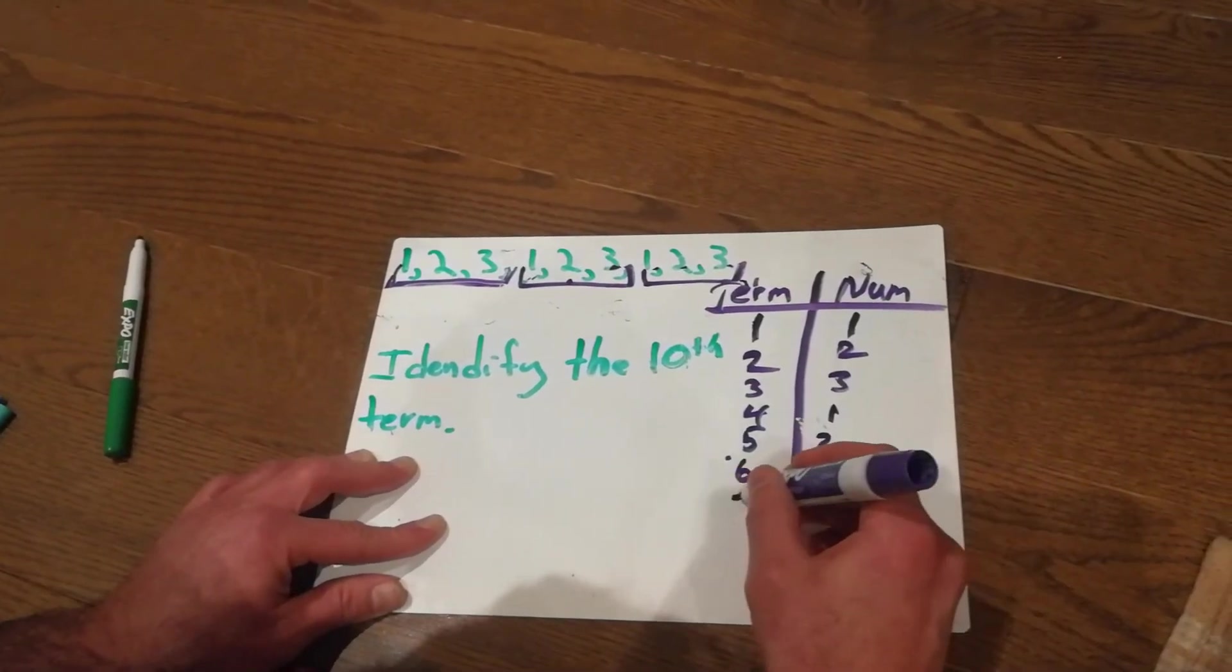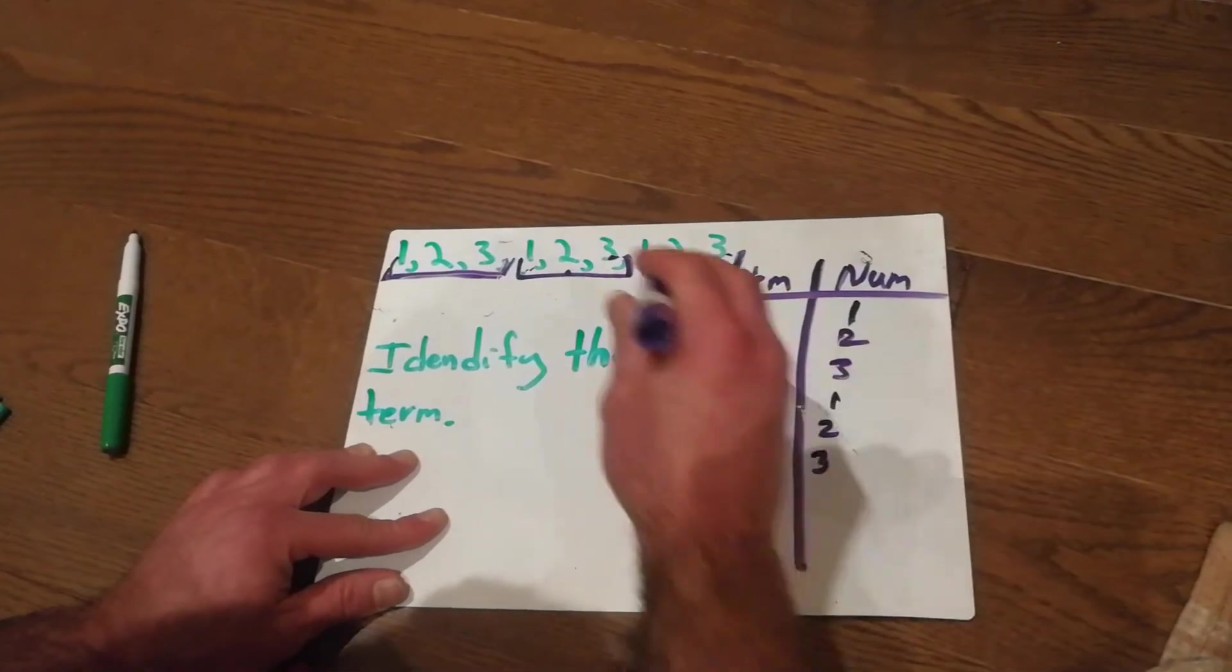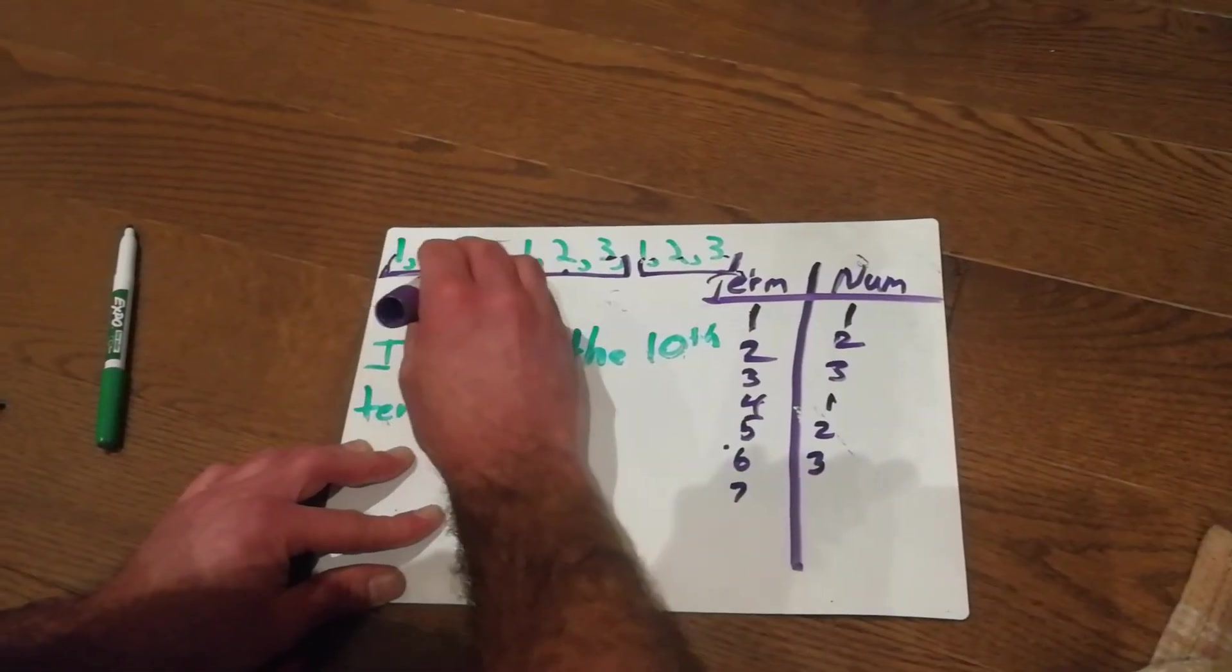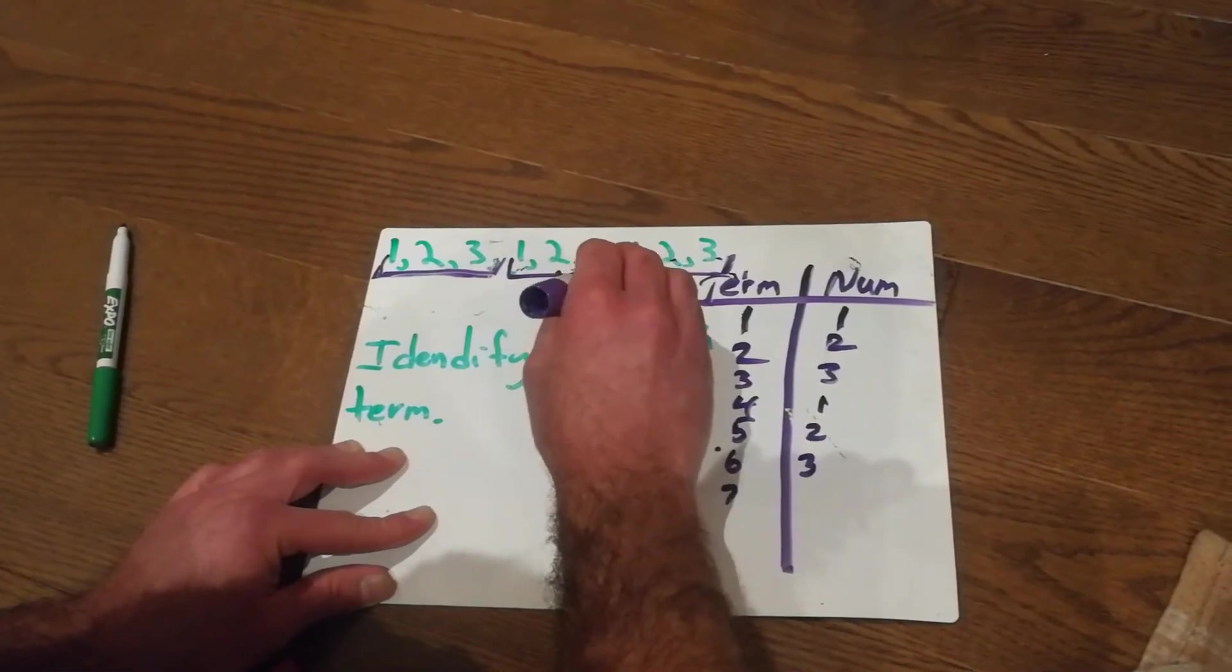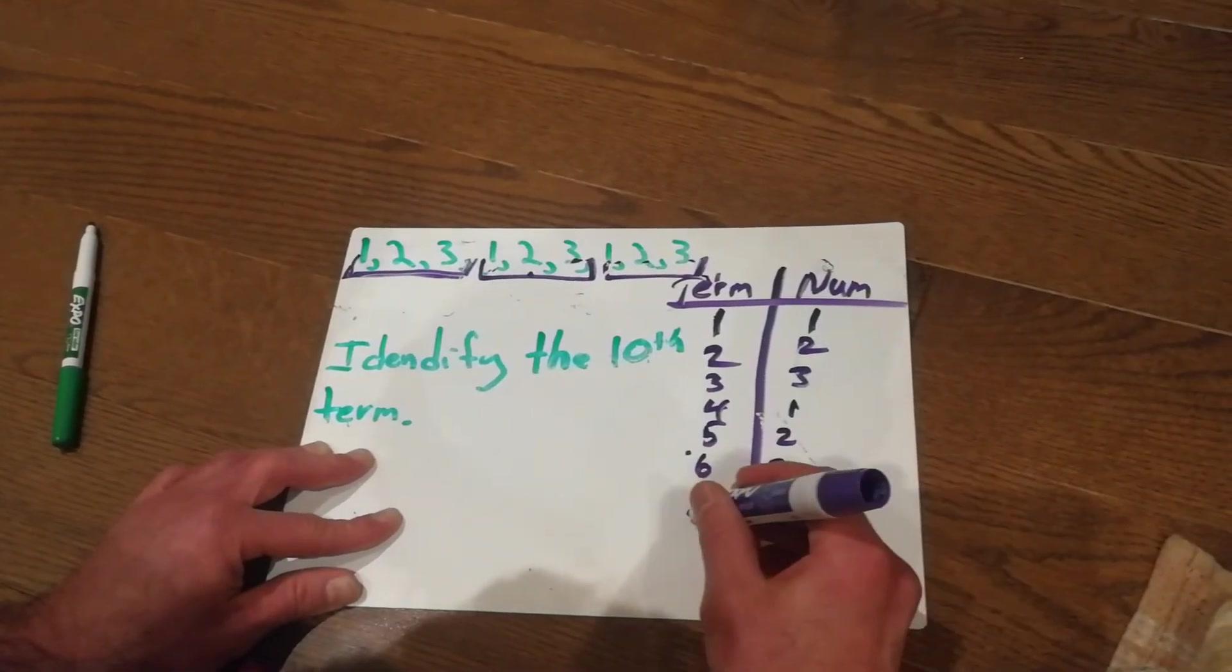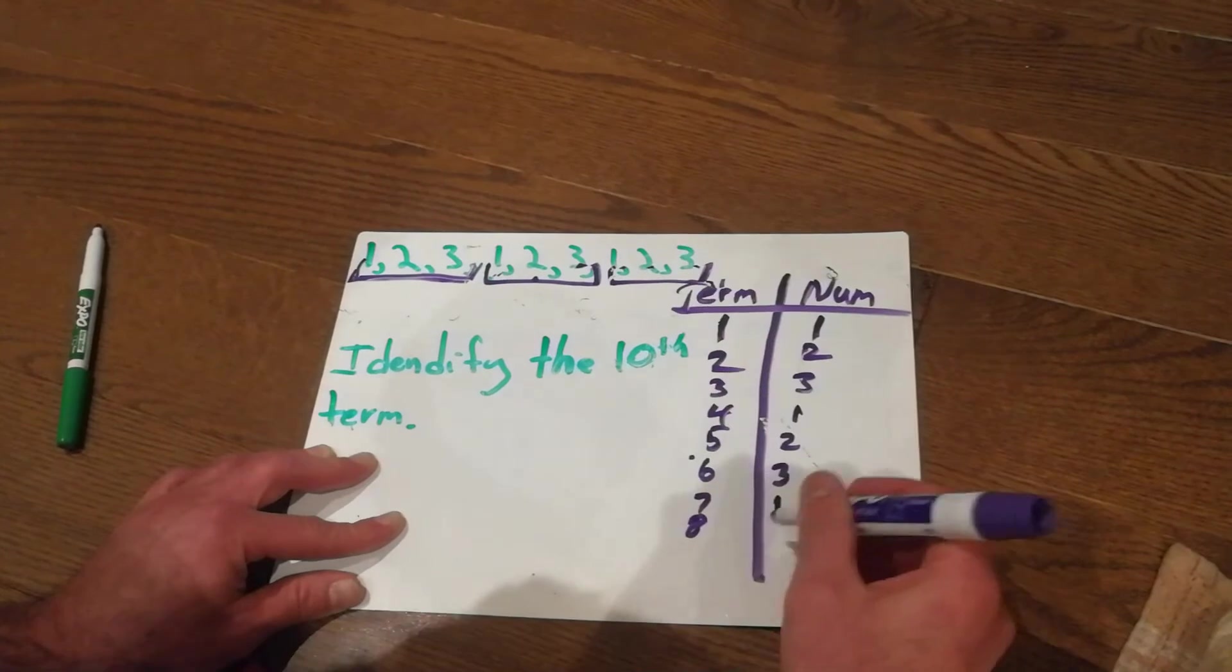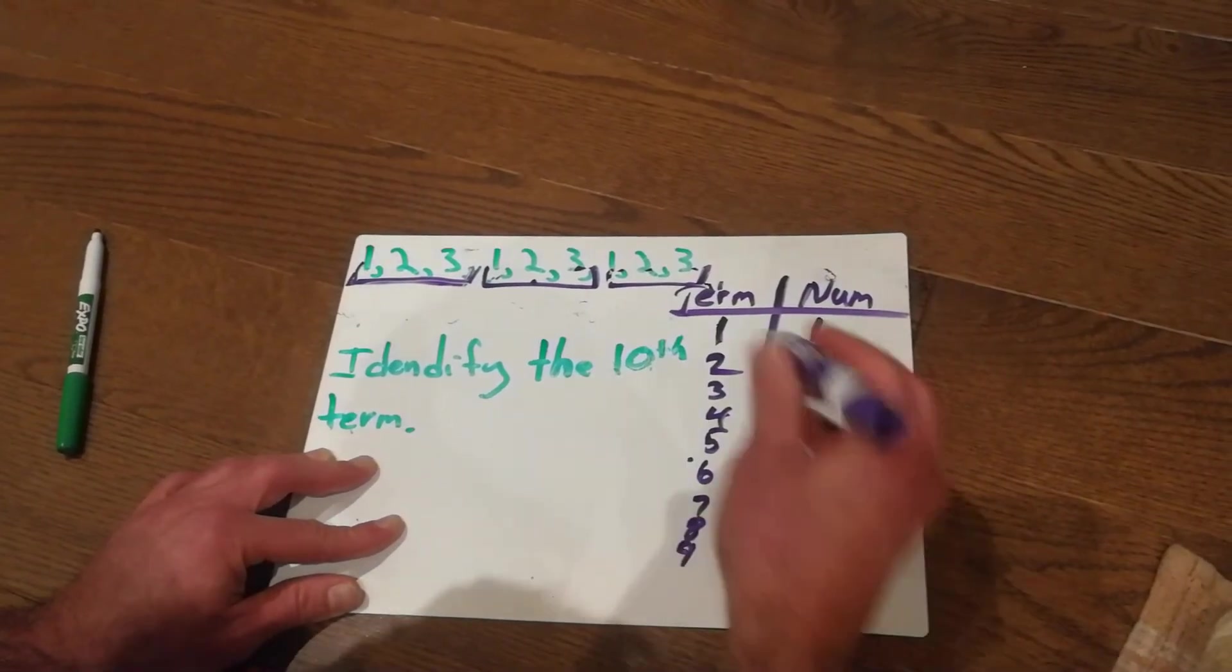Term 7, again we're back to number 1. Count 1, 2, 3, 4, 5, 6, 7. Back to number 1. Term 8 is number 2. Term 9 is number 3.